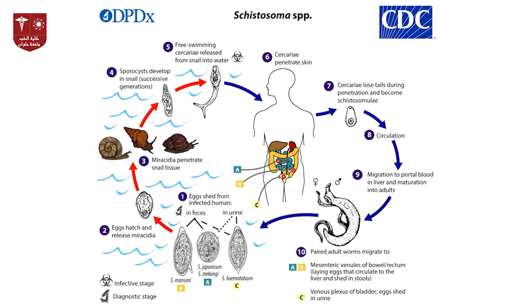In the case of vesical veins, eggs exit through urine — this is Schistosoma haematobium. From mesenteric veins, eggs penetrate the intestine and go into the stool — this is Schistosoma mansoni. Each species has its own intermediate host.